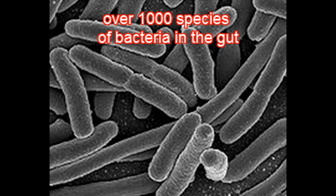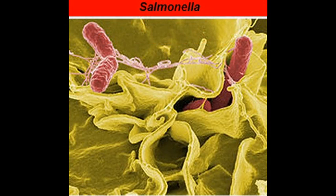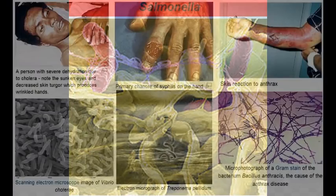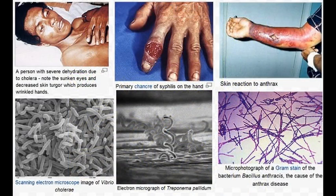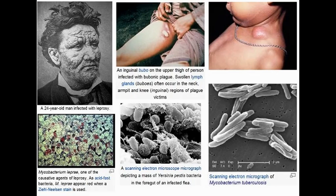A few species of bacteria are pathogenic and cause infectious diseases, including cholera, syphilis, anthrax, leprosy, and bubonic plague. The most common fatal bacterial diseases are respiratory infections, with tuberculosis alone killing about 200 million people a year.